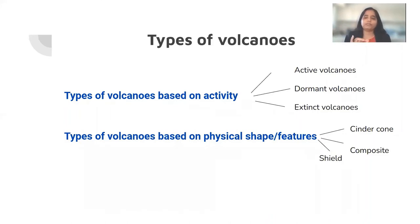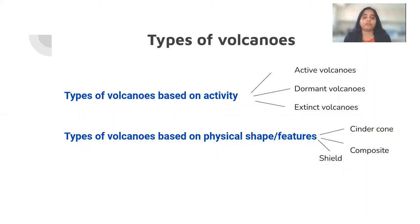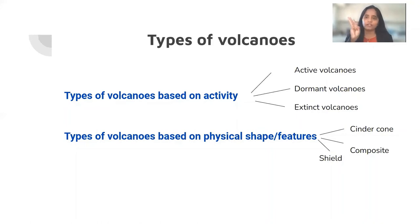Volcanoes based on shape or physical features are also categorized as: cinder cone volcanoes, composite volcanoes, shield volcanoes, and volcanic fissures. So volcanoes are categorized based on activity into active, dormant, and extinct. And based on physical shape or feature into cinder cone volcanoes, composite volcanoes, shield volcanoes, and volcanic fissures.